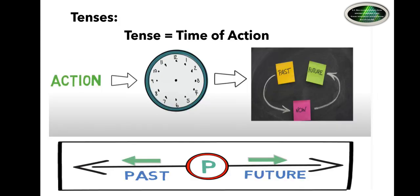A tense is nothing but a time of action. It actually describes when an action has taken place with respect to time. The time of the action could be past, present, or future. Let's consider this timeline below. The circle represents the present time, the line to the left of the circle represents the time that has already passed and is considered the past time, and the line moving ahead to the right is called the future time.